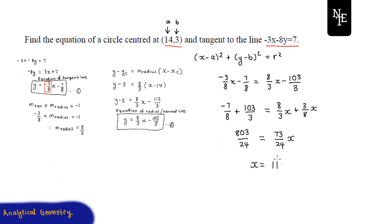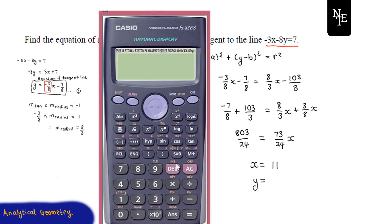To find the corresponding y value, we can substitute x = 11 into equation 1 or equation 2 — because at that x value, both lines share the same y value; that's the common point. Substituting into equation 1: y = -3/8 × 11 - 7/8, which gives a y value of -5.